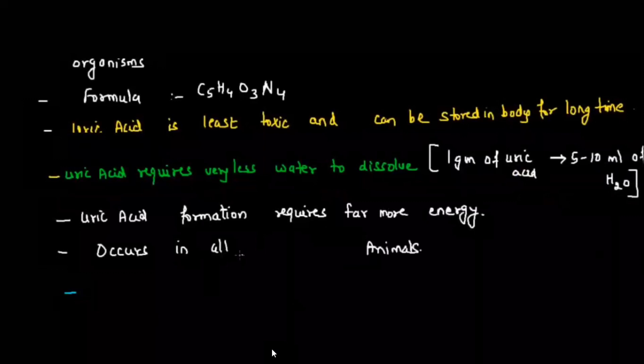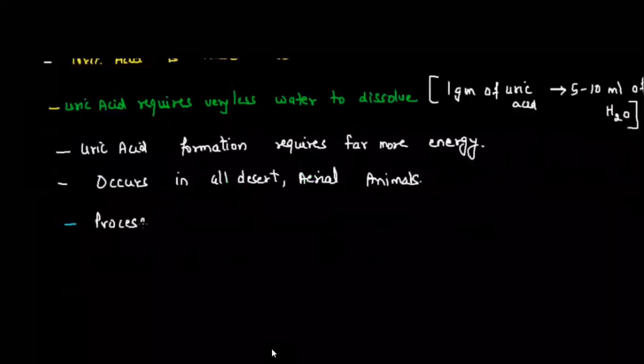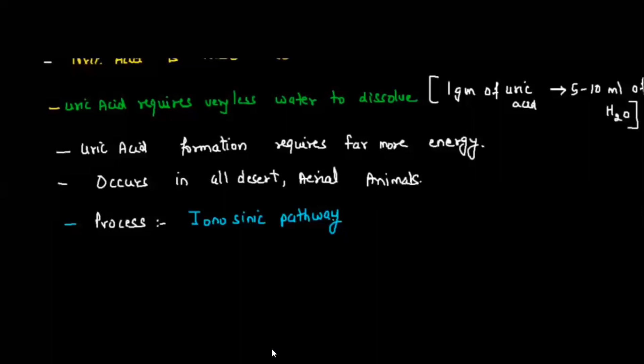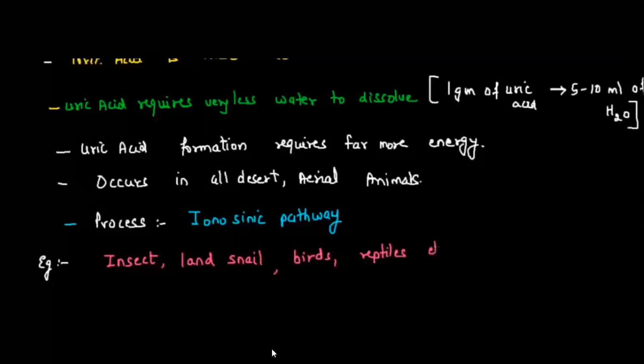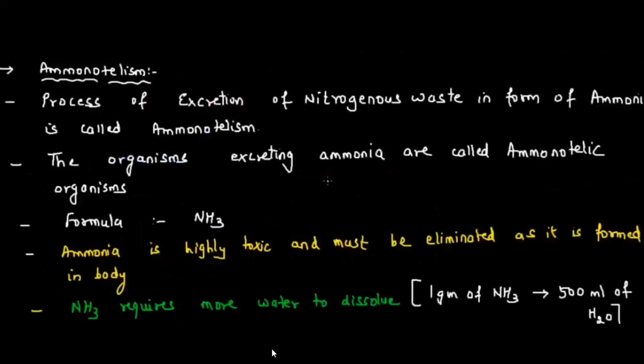Uric acid formation requires far more energy. Uricotelism is seen in all desert animals or aerial animals. Birds, for example, are aerial and excrete uric acid. Uric acid is formed by the inosinic pathway. Ammonia is formed by deamination, urea is formed by the ornithine cycle, and uric acid is formed by the inosinic pathway. Examples include insects, land snails, birds, and reptiles. The shortcut is 'RIBS': Reptiles, Insects (and birds), snails.